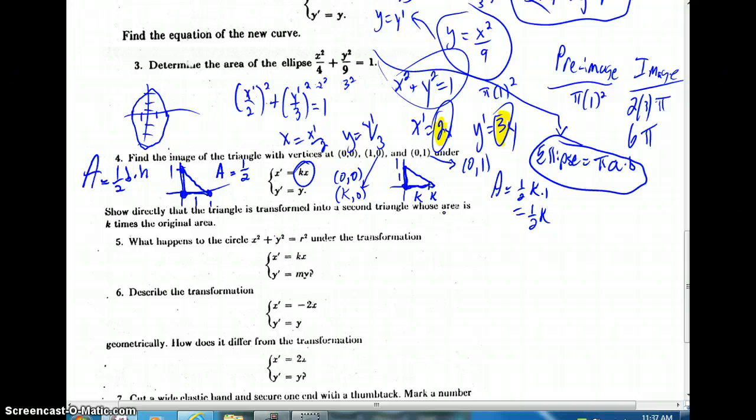Take a look at number 5. What happens to the circle under the transformation? Well, we've already done that with the ellipse. Super quick, x would equal x prime over k, y was equal to y prime over m. And if we were to substitute these values in, we'd get (x prime over k)² plus (y prime over m)² set that equal to r².